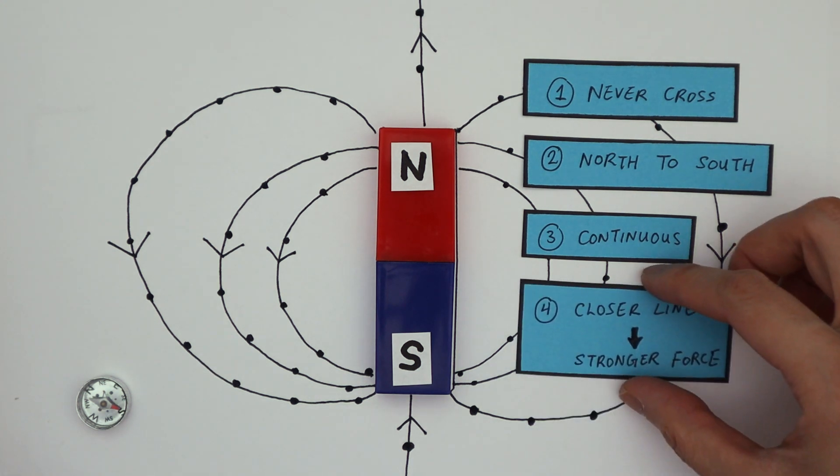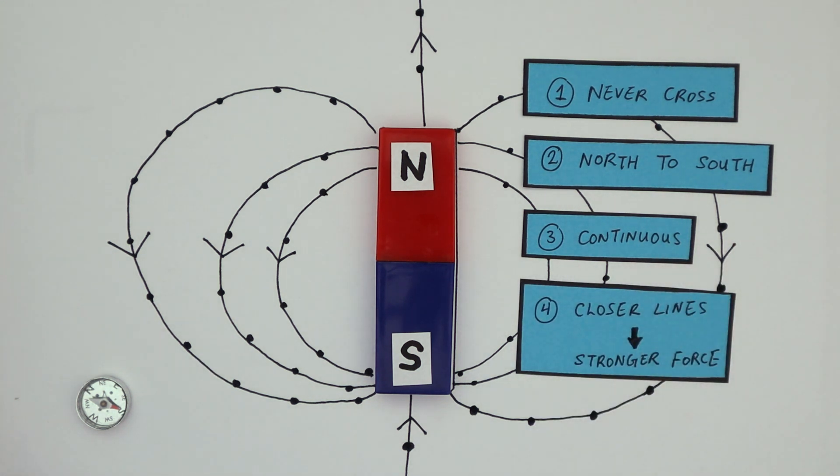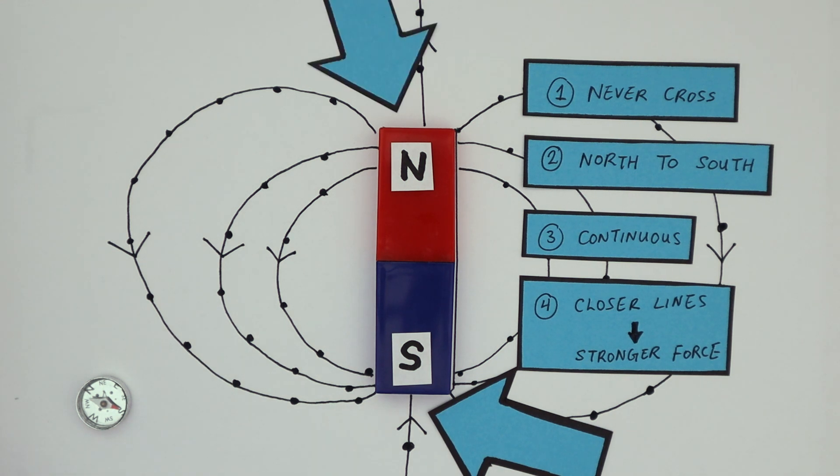Number four, where the lines are closer together, the magnetic force is the strongest. And that's at the poles of the magnet.